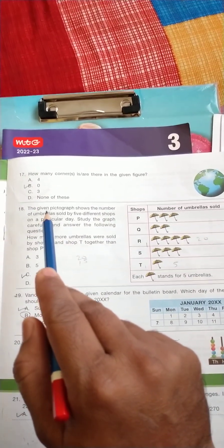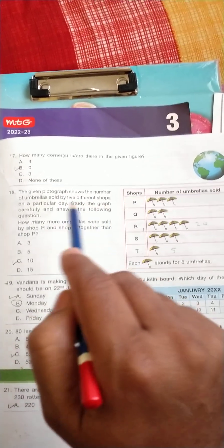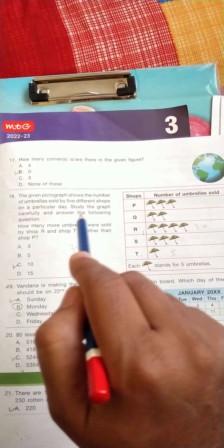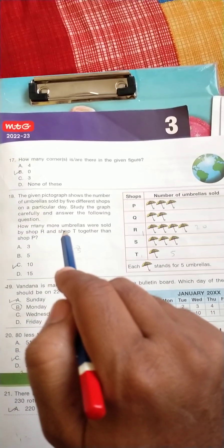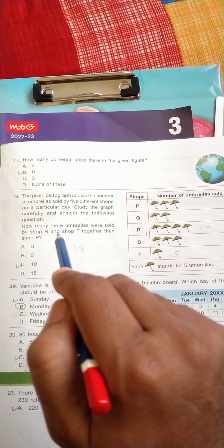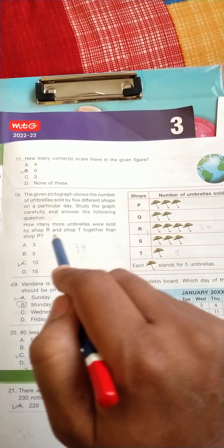Question number 18: the given pictograph shows the number of umbrellas sold by 5 different shops on the particular day. Study the graph carefully and answer the following questions. How many more umbrellas were sold by shop R and shop T together than shop P?